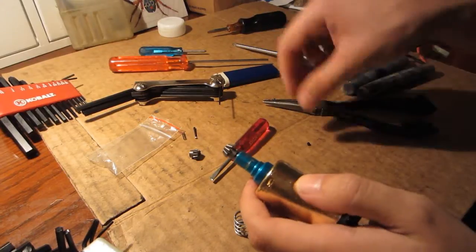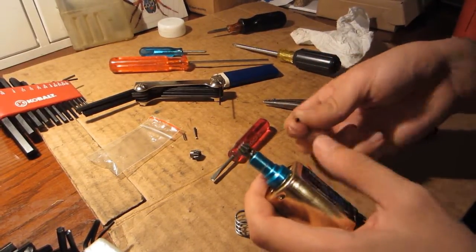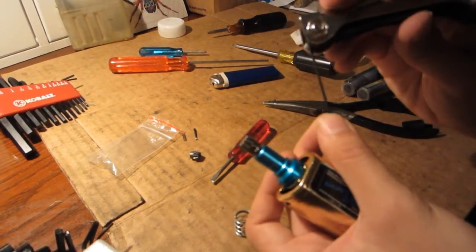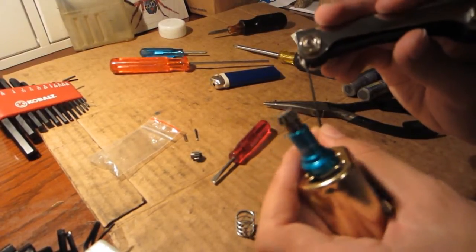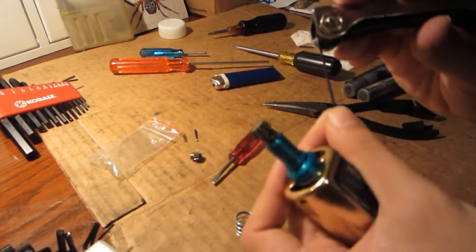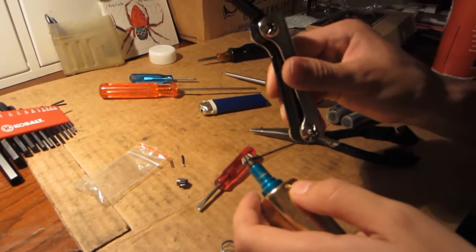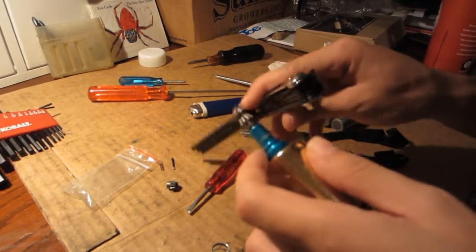All right, there you go. Now grab your grub screw again, fit it onto your allen key, and screw it back in.